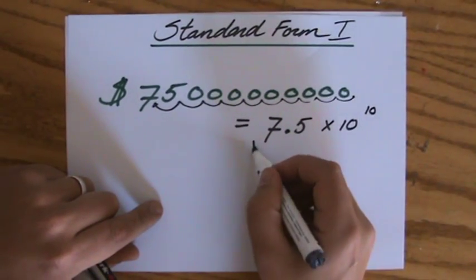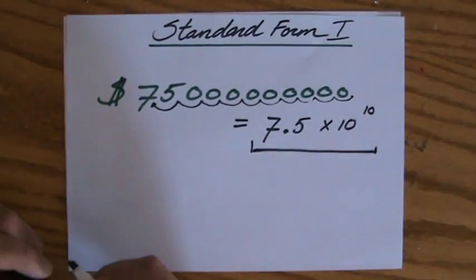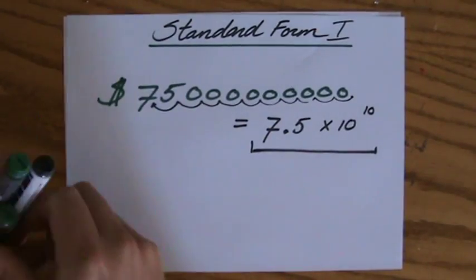And now it just looks a little bit easier to interpret. Okay. Same thing for a very small number.